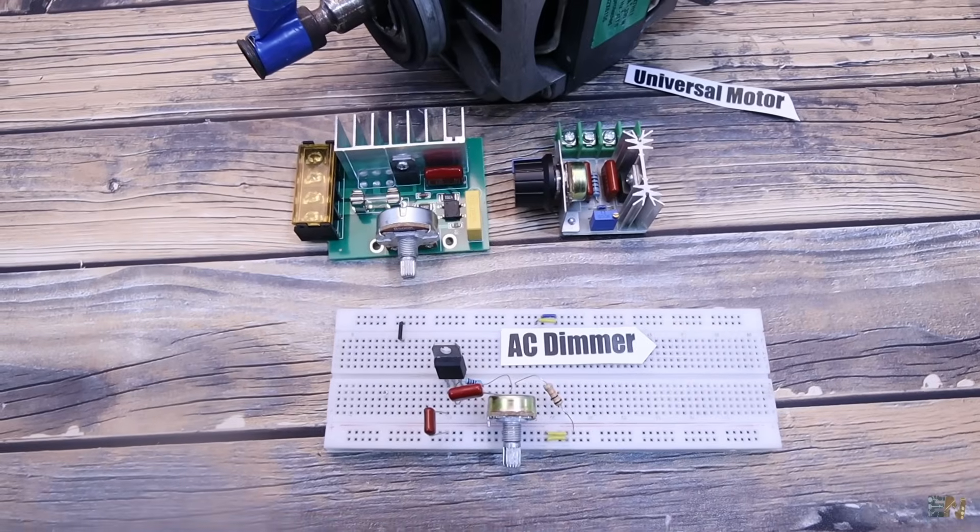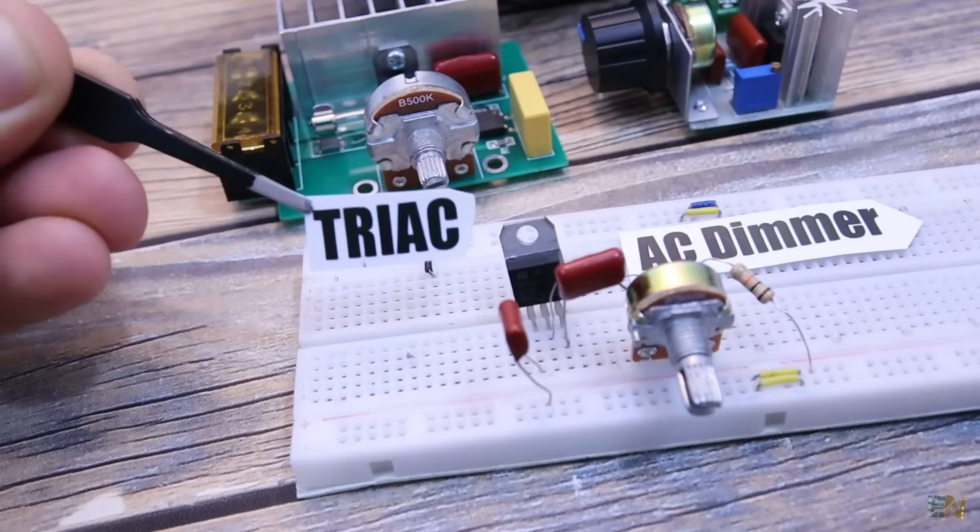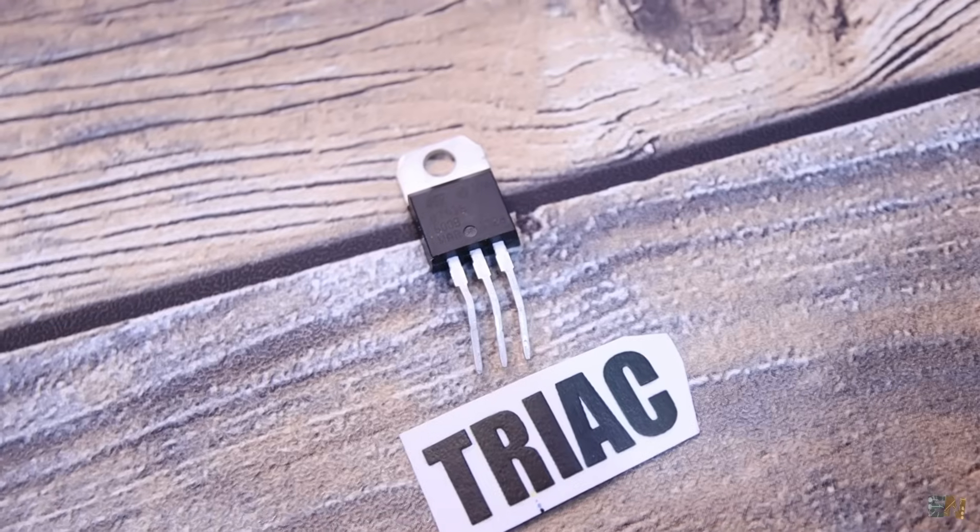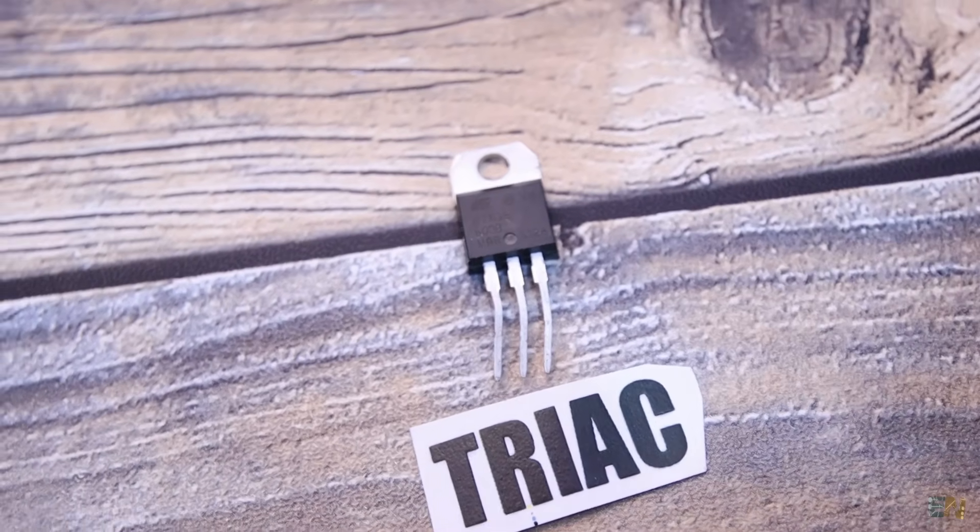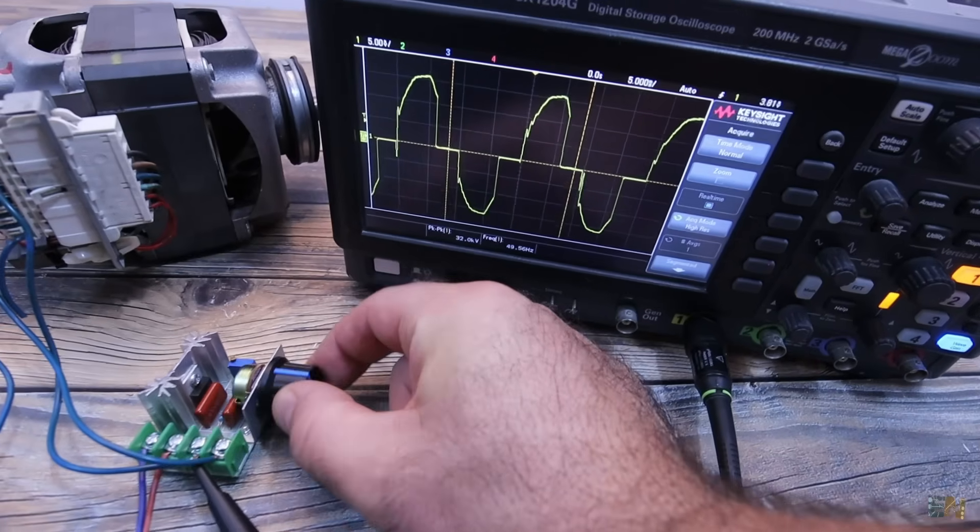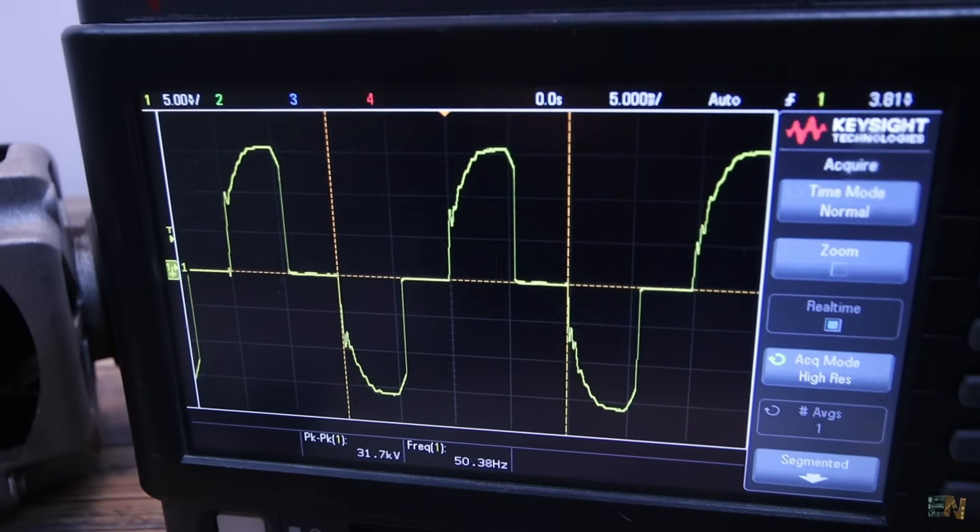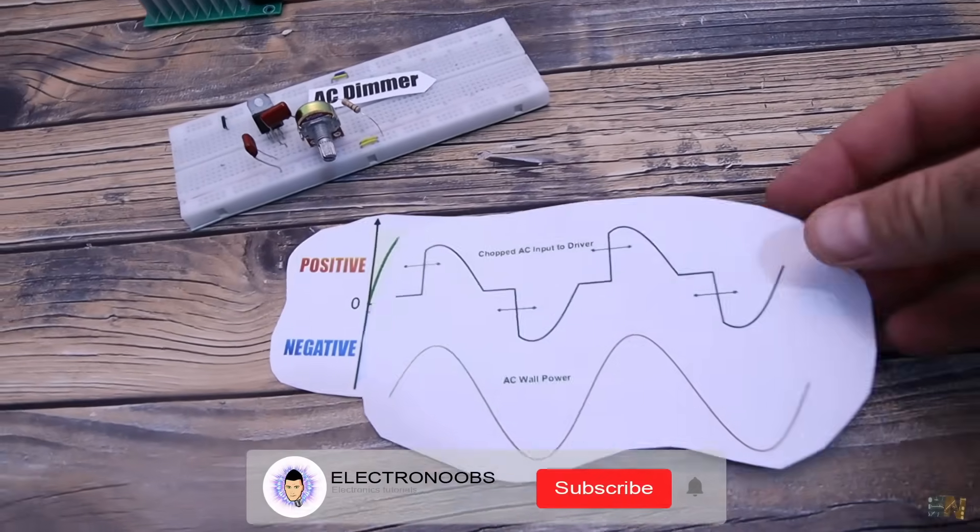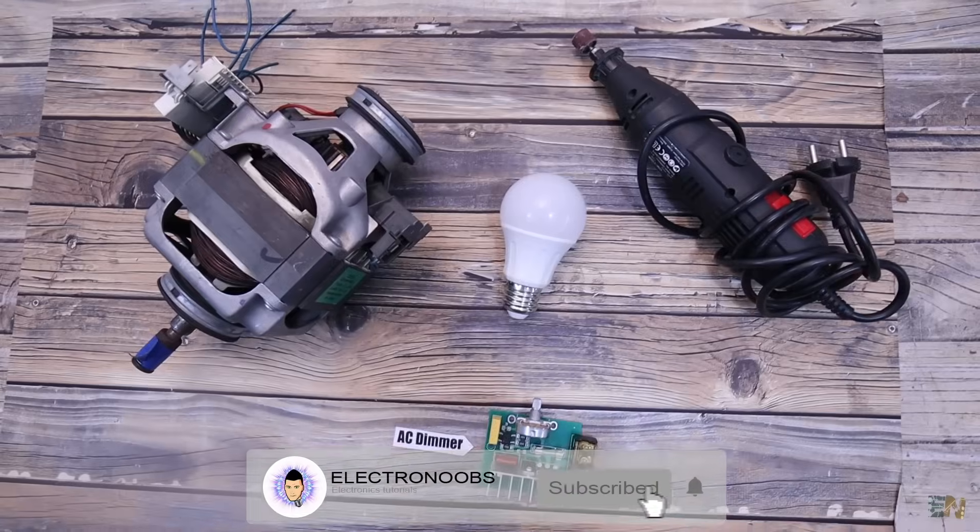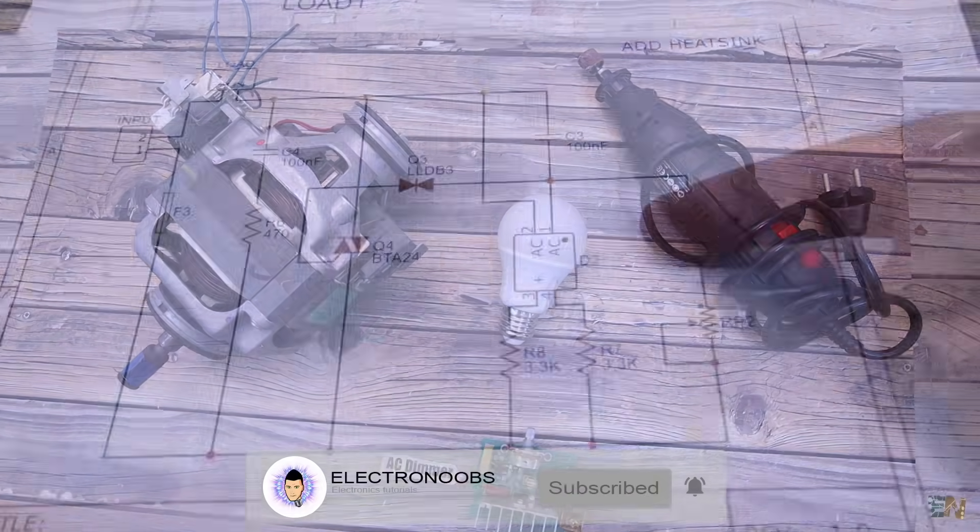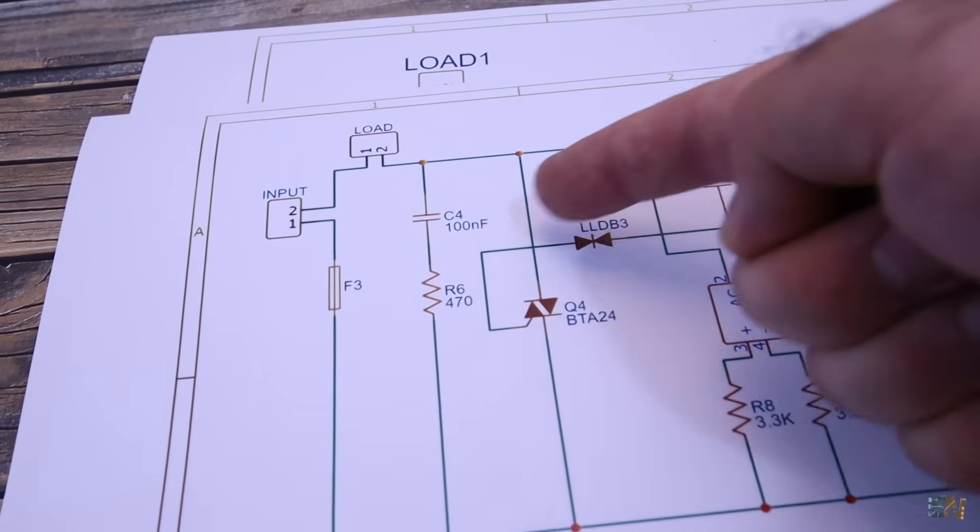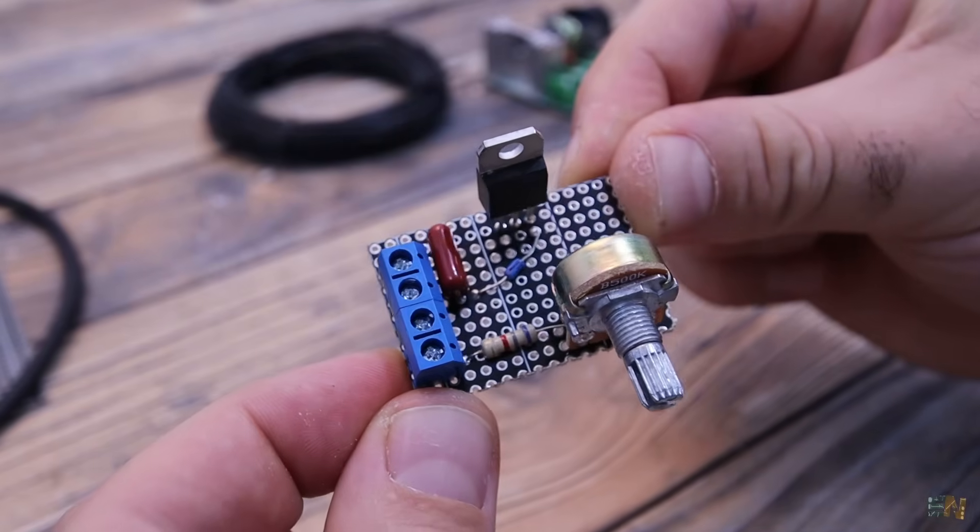That circuit is called an AC dimmer and is made with a component called a triac. Today I want to explain how an AC dimmer works, how a triac works and why it's such an important component, and show you a few AC dimmer circuits and test them out with motors, AC light bulbs and other AC devices. This video can be quite interesting, so guys, let's get started.